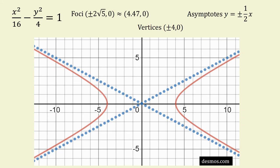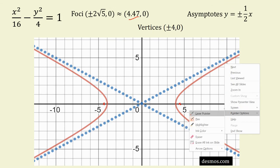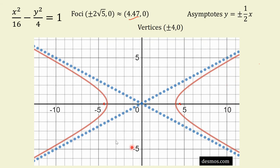Looking at the sketch: 2 root 5 is approximately 4.47, so the foci have moved just slightly beyond the vertex at 4 — which is exactly what we expect. The foci are marked there, the asymptotes are y equals plus or minus half x — when x is 10, y is 5; when x is minus 10, y is minus 5. We've got our nice asymptotes, the foci marked, and our vertices, giving a clear sketch of the hyperbola.